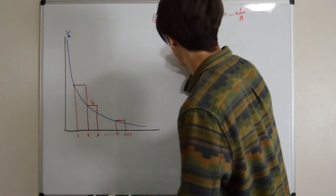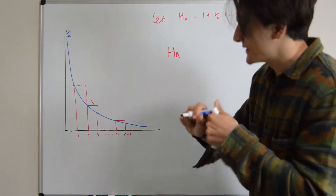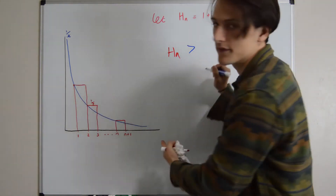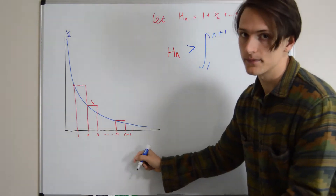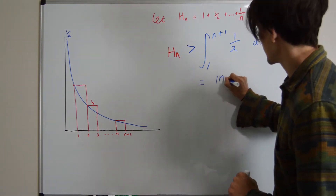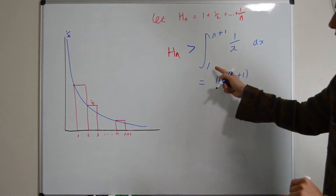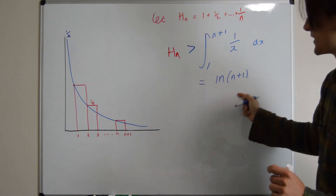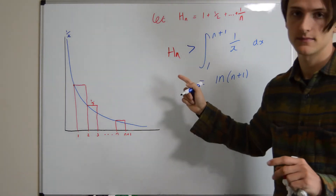So let's write that down mathematically. We have H(n), and that's greater than the area under the blue curve. That's represented by the integral from 1 to n+1 of 1 over x dx. And this is, of course, equal to the natural log of n+1, and then we minus the natural log of 1, but the natural log of 1 is 0, so we're just left with ln(n+1). So we found a lower bound: the natural log of n+1 is less than the partial sum up to n.